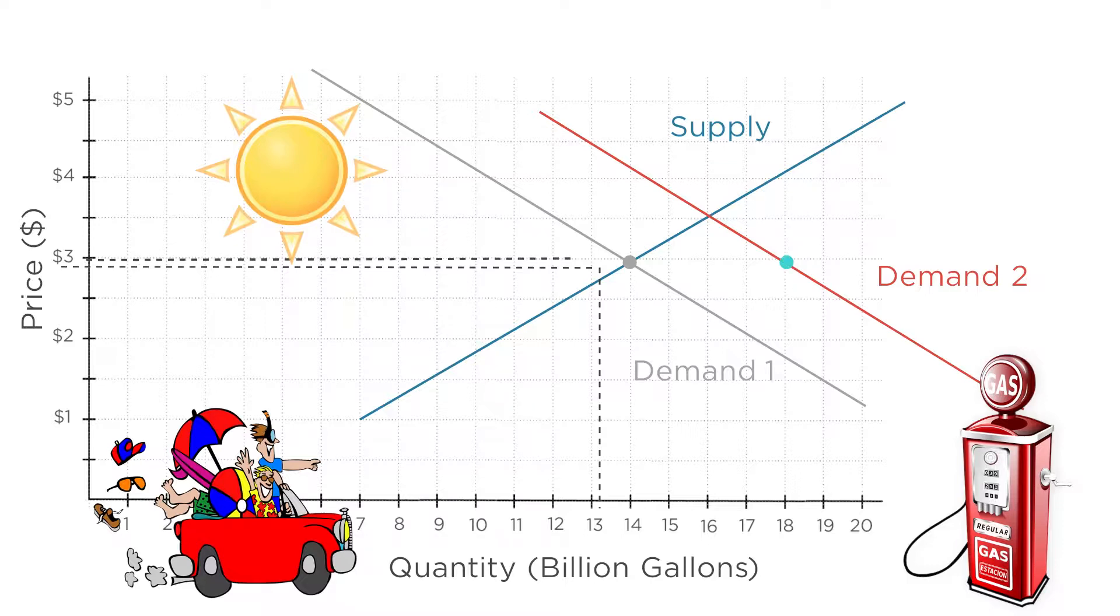Now, at a price of $3 per gallon, consumers want 18 billion gallons of gas a month, but gas companies are only willing to produce 14 billion gallons at that price. We find ourselves in a situation of excess demand. People want more gas than firms are willing to produce. What do firms do in response? They'll produce more gas to meet demand, but to do so, they have to charge higher prices. They are moving up the supply curve, producing at a higher marginal cost, so the price needs to go up too.